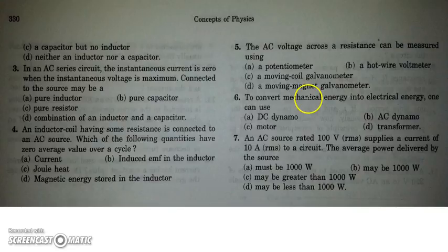The next question is, to convert mechanical energy into electrical energy, we can use AC dynamo. So most of the power stations use this type of dynamo and produce electricity that comes in our home. So we use AC dynamo to convert mechanical energy.